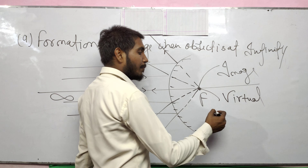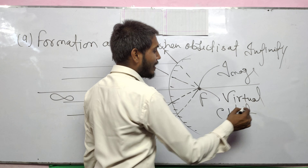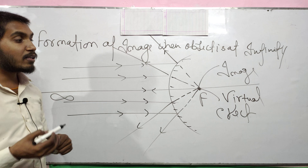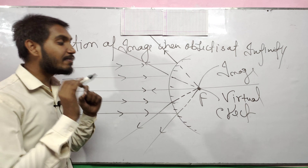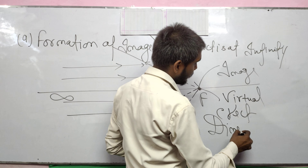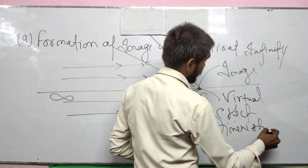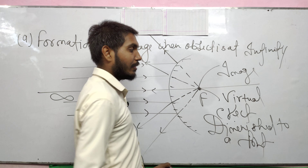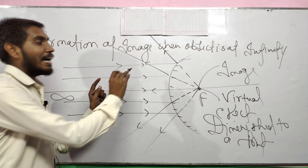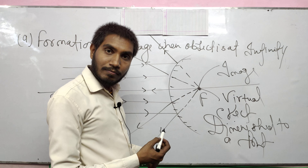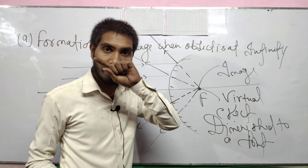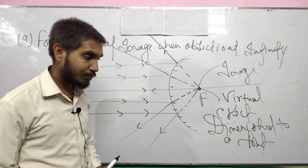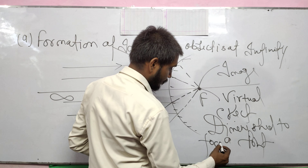The image is virtual and erect — upward remains upward, downward remains downward. So the image is virtual, erect, and highly diminished to a point.